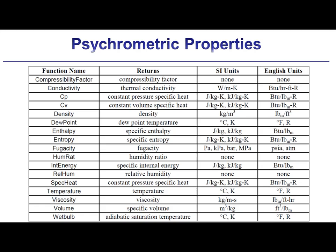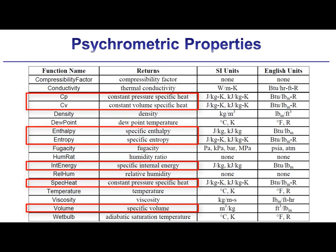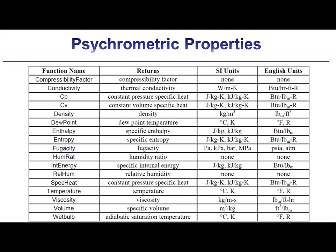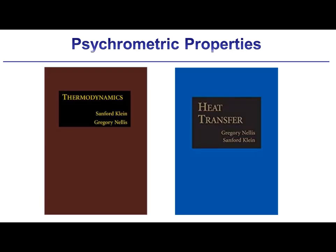You should note that the specific properties for air_H2O are all reported on a per unit mass of dry air basis, which is the convention when using psychrometric functions. Detailed information about these properties is provided in textbooks like Klein and Nellis, as well as Nellis and Klein.